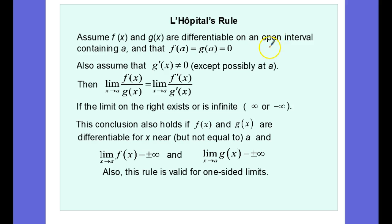So a little bit of formal statement here. Assume f(x) and g(x) are differentiable on an open interval that contains a. So a is that value that our limit is approaching. We also assume that f(a) is equal to g(a) is equal to 0. In other words, we get 0 over 0 when we take the limit of the quotient.